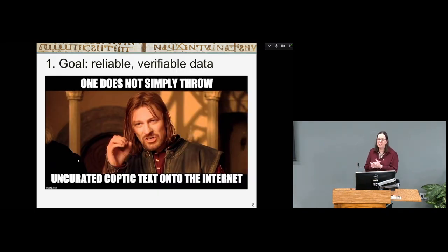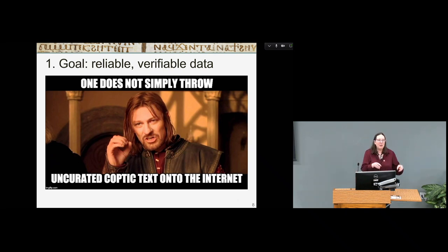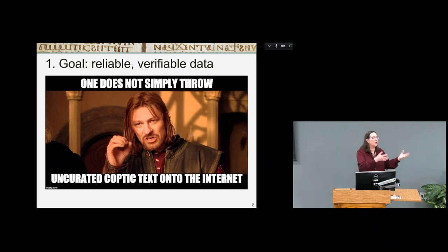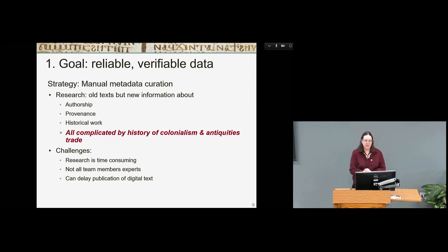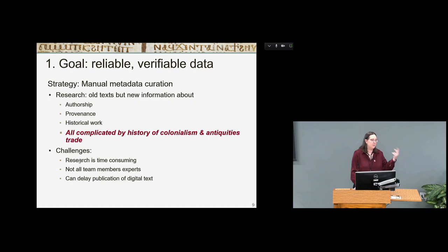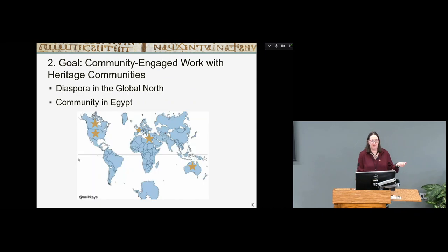One of our challenges is reliable, verifiable data — who wrote it, where's it from, what historical work is this text even from? We have manual metadata curation, which is time consuming, and not all team members are experts in each particular text. Getting the digital text online in a verifiable way can be delayed by just the manual metadata curation. We don't want to just put stuff online.